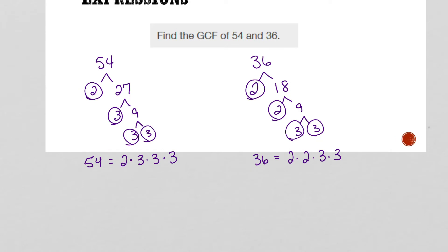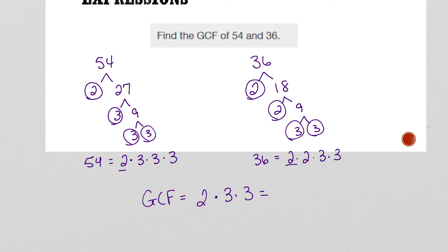What do they have in common? They both have at least one 2, so we can write that down. Notice this one has an extra 2 but this one doesn't, so you can only pull out what they have in common. This one has three 3s but this one only has two 3s, so I can only pull out two 3s. Their GCF is 2 times 3 times 3, which equals 18. So our GCF is 18. This is one method.